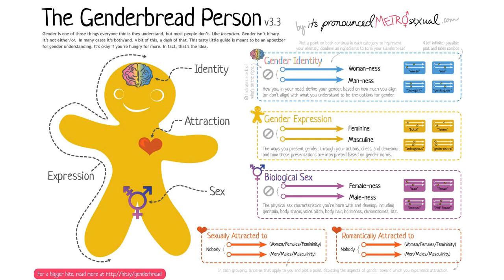Sex derives from biology, and gender derives from social constructs. But what about sexuality? It sometimes gets mixed in with sex and gender, but is in fact its own distinct phenomenon. Who a person wants to sleep with doesn't necessarily have anything to do with their biology or the gender that they identify with. The fact that someone is transgender has no bearing on whether their sexual preference is for men, women, both, or neither. Sexual orientation comprises three different domains of every person's experience: sexual identity, behaviour, and romantic or emotional attraction.